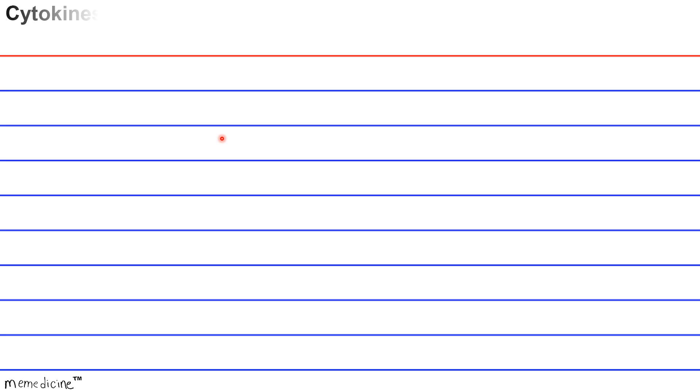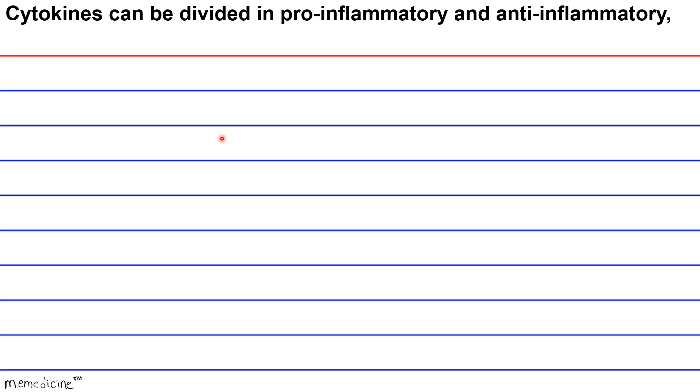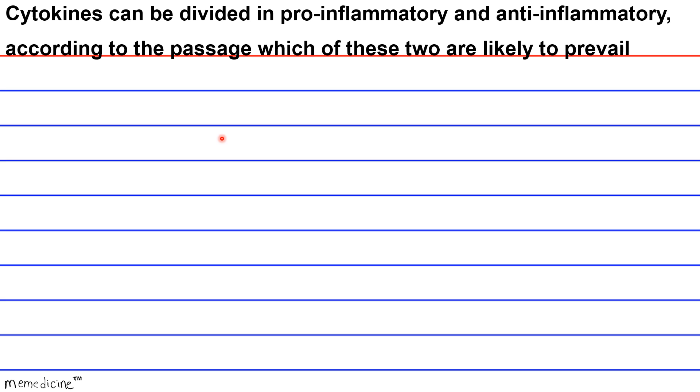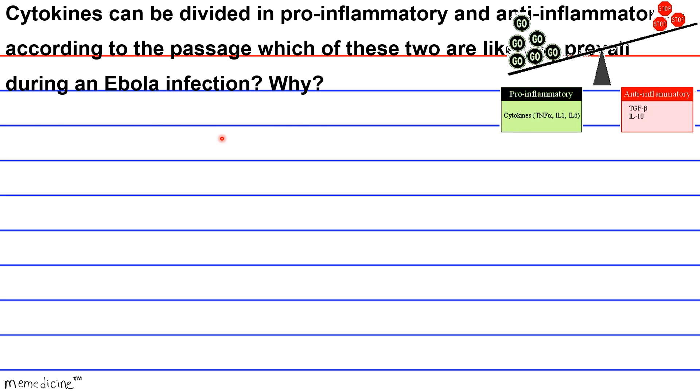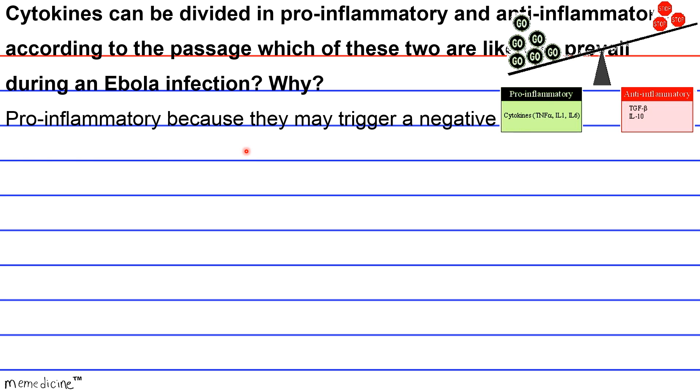Cytokines can be divided into pro-inflammatory and anti-inflammatory. According to the passage, which of these two are likely to prevail during an Ebola infection and why? A — Pro-inflammatory, because they may trigger a negative feedback mechanism with lymphocytes leading to a sepsis-like condition. B — Anti-inflammatory, because they may trigger a positive feedback mechanism with lymphocytes dampening the immune response. D — Pro-inflammatory, because they may trigger a positive feedback mechanism with lymphocytes leading to a sepsis-like condition.